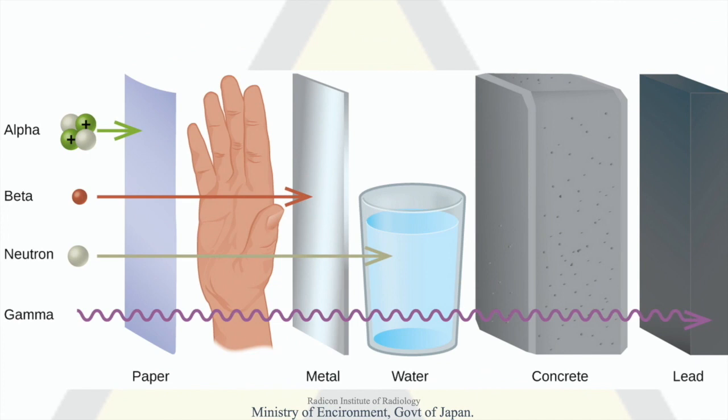This illustration shows the varying ability of different types of radiation to pass through materials. From least to most penetrating, there are alpha rays, beta radiation, neutrons, and finally gamma rays.